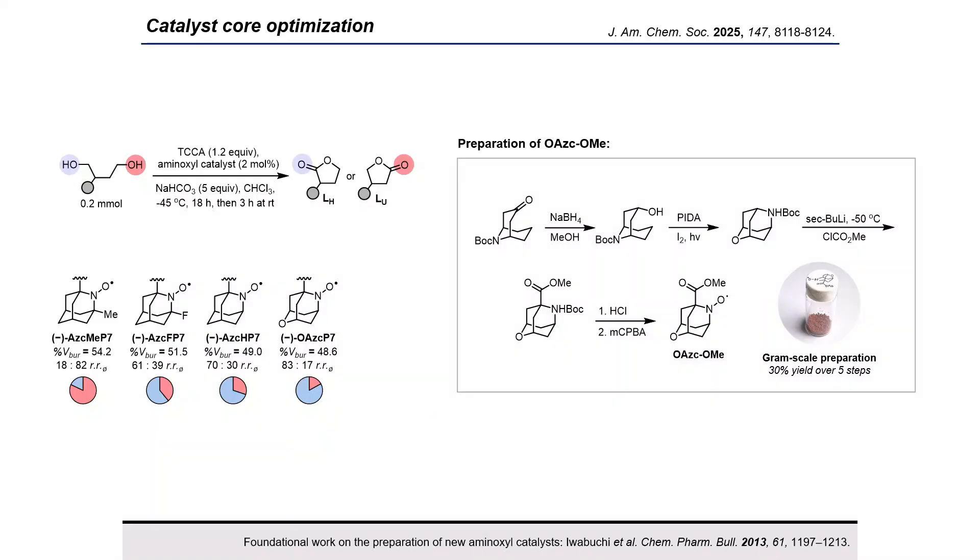We attribute this improvement to the retraction of the adjacent hydrogens, due to the shorter carbon-oxygen bonds compared to the carbon-carbon bonds. We prepared this core starting from the reduction of a commercially available ketone to the corresponding alcohol, which was primed in orientation for a key cyclization step with PIDA and iodine under blue light irradiation. The ester handle for peptide coupling could then be installed by direct dilithiation and trapping with methyl chloroformate. Deprotection of the amine and oxidation with MCPBA could then furnish the aminoxyl radical core in 30% yield over 5 steps on a gram scale.